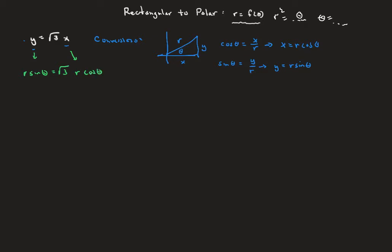We are now in r's and thetas. Our goal is to get r by itself with just theta on the other side. The problem here is that if we divide by r, it disappears altogether. So we'll live with that — this becomes sine theta equals square root of three times cosine theta. Then dividing cosine to the other side, we get sine theta over cosine theta equals the square root of three.